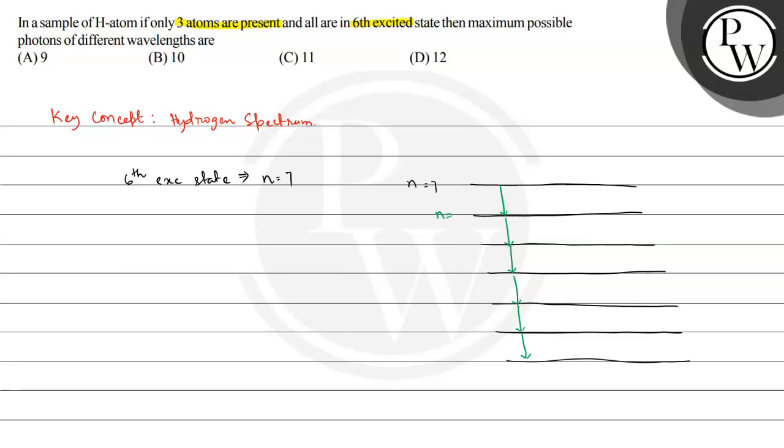So n equals 7 to n equals 6, then n equals 6 to n equals 5, then 5 to 4, then 4 to 3, 3 to 2, and 2 to 1. One level at a time, it de-excites. So we can have six photons from here.